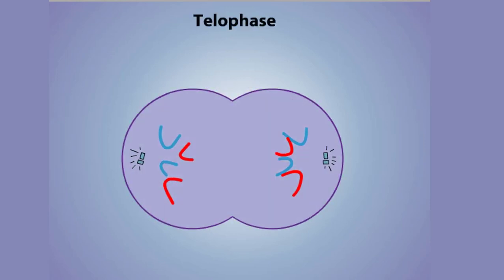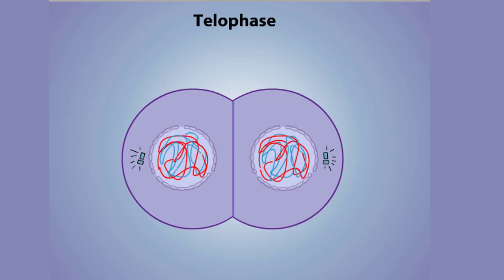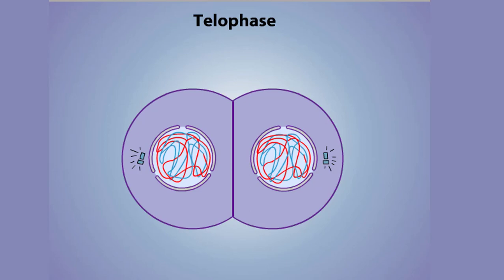In telophase, the separating chromosomes reach the poles. The division of the cytoplasm, called cytokinesis, also begins during this phase. As the cells enter the next interphase, the nuclear envelopes and nucleoli reform and the chromatin again becomes diffuse.